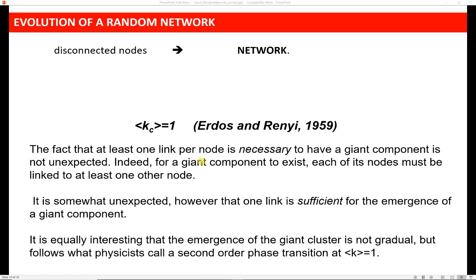So each node in the giant component has got to be connected to at least one other node. It is strange though that having just one link is sufficient for the emergence of a giant component. So we know that we need to have that, but we don't necessarily expect that if we do have at least one link per node, that that's all it actually takes for the emergence of a giant component.